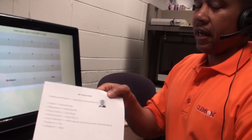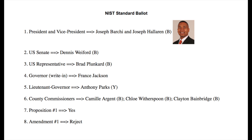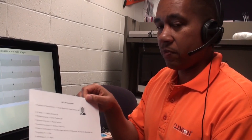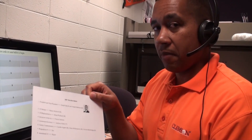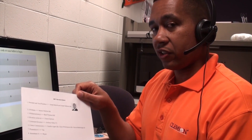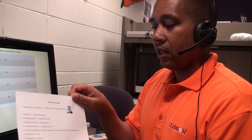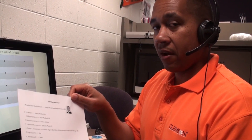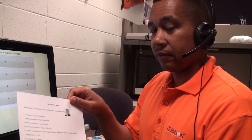Here's my ballot. As you can see, it only contains the individuals and selections I made and the contest. So there's no ambiguity about whom I voted for. Now this ballot will go into the ballot box, where it will later be scanned using optical character recognition and tallied.